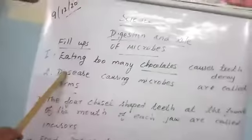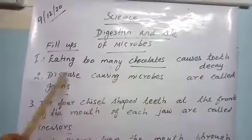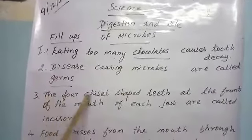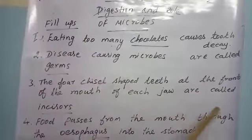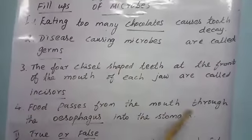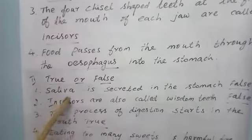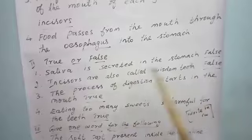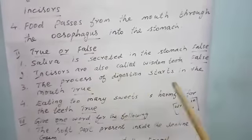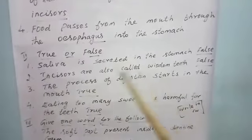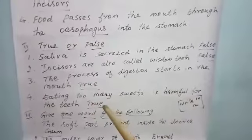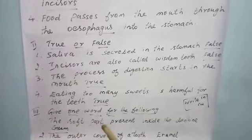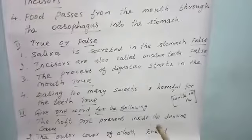Shall we read it again. Eating too many chocolates causes tooth decay. Diseases causing microbes are known as germs. The four chisel-shaped teeth at the front of the mouth of each jaw are called incisors. Food passes from the mouth through the esophagus into the stomach. True or false: Saliva is secreted in the stomach — false. Incisors are also called wisdom teeth — false. The process of digestion starts in the mouth — true. Eating too many chocolates is harmful to the teeth — true. Give one word: the soft part present inside the dentine is known as gum; the outer cover of the tooth is known as enamel.